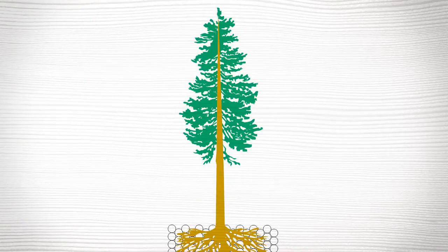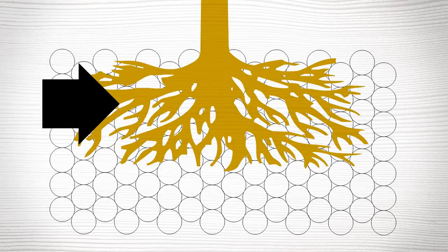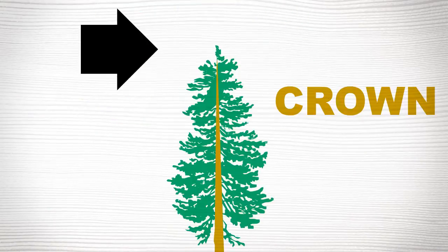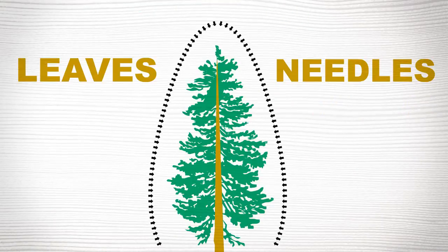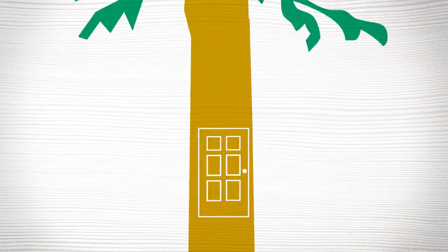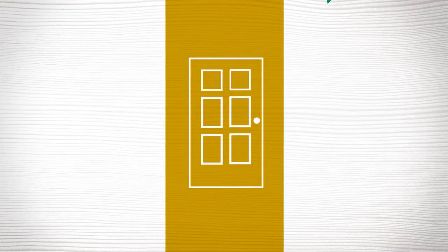Now, you probably know the basic parts of a tree: the roots, trunk, crown, and the leaves or needles. But what's going on in there? Come inside, we'll show you.